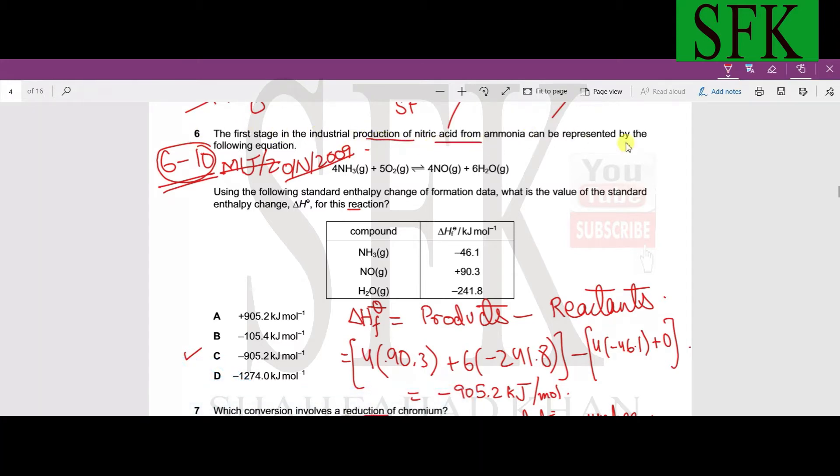MCQ number six: the first stage of industrial production of nitric acid from ammonia can be represented by this equation. Ammonia is reacting with oxygen to form nitrogen monoxide and water. Using the final standard enthalpy change of formation data, whenever formation data is given...